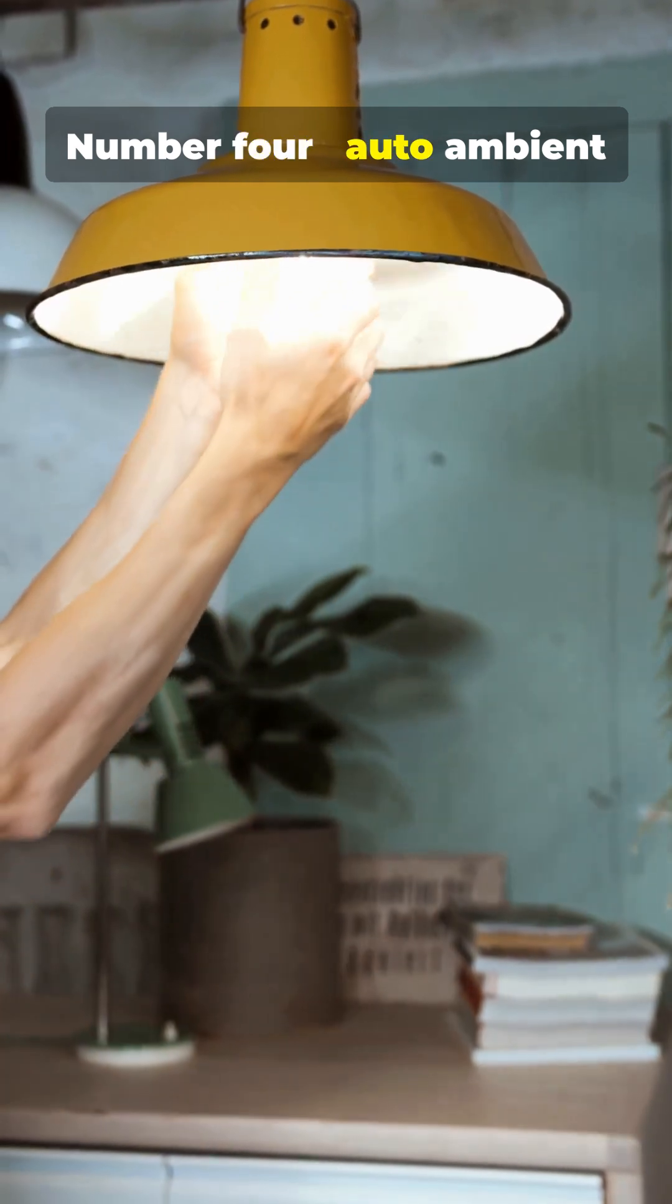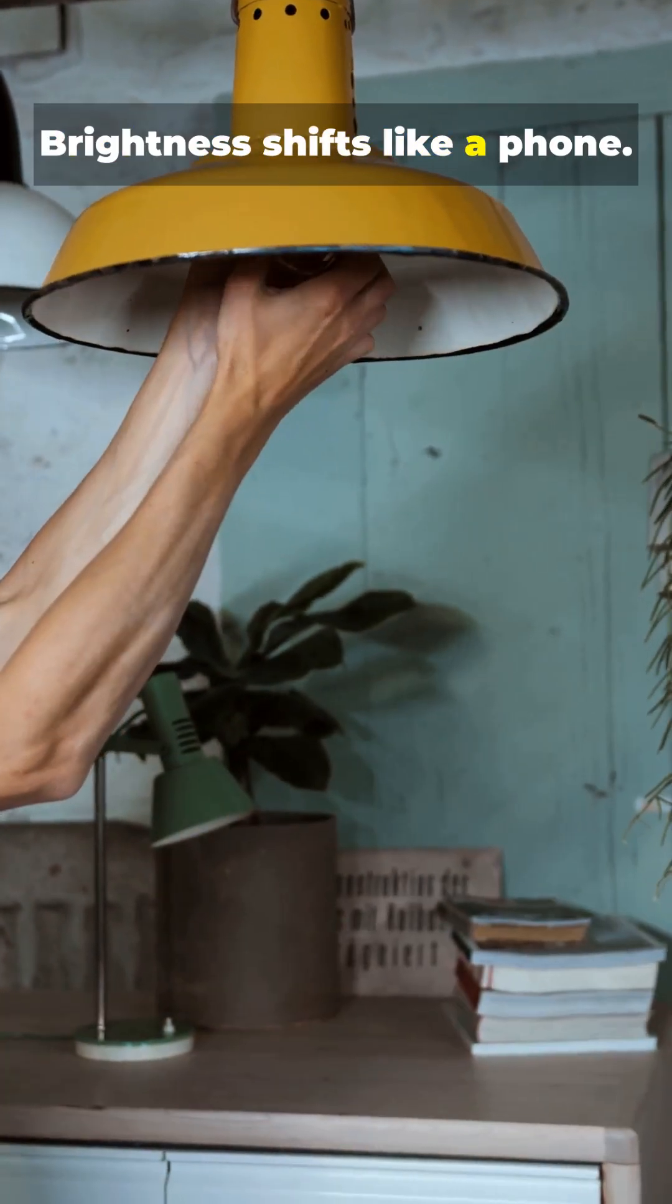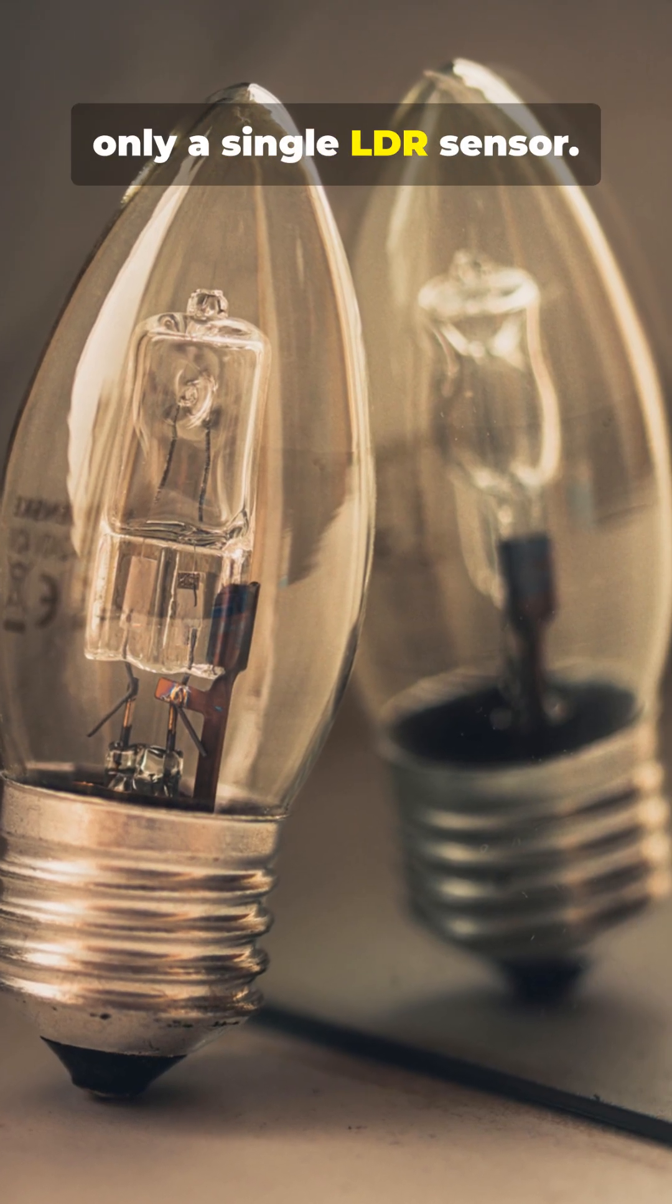Number 4. Auto ambient light adjuster. Brightness shifts like a phone. No neural net. Only a single LDR sensor.